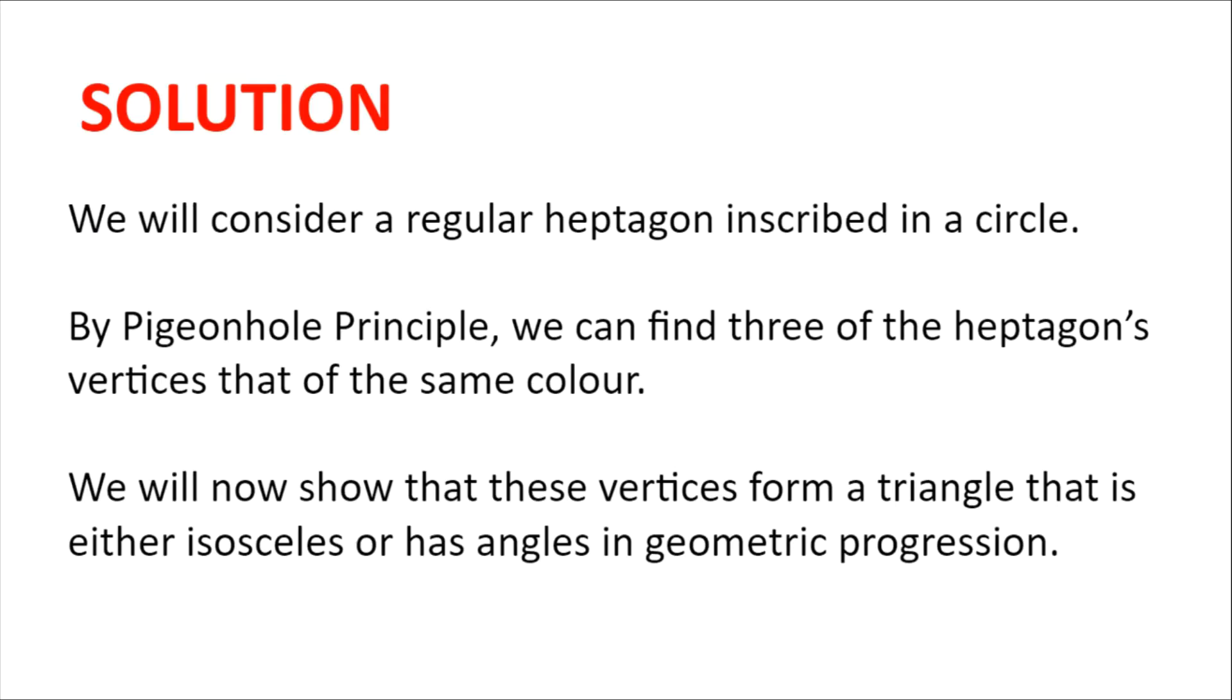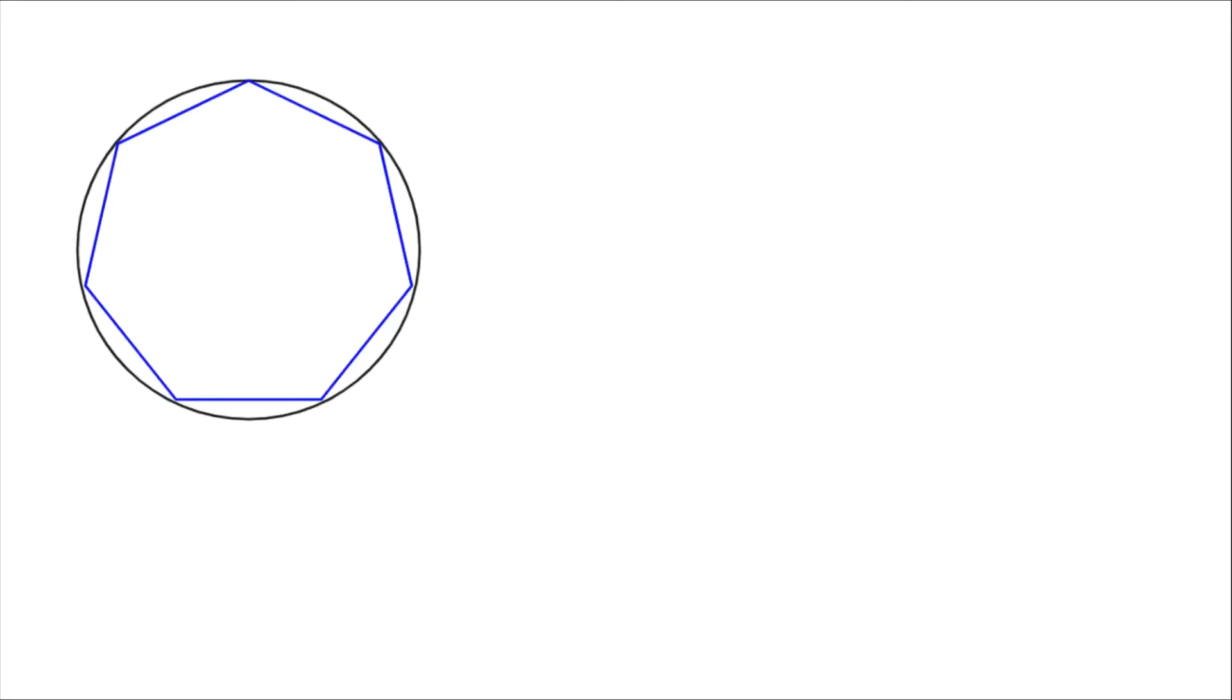Solution. We will consider a regular heptagon inscribed in a circle. Then by pigeonhole principle, since a regular heptagon has seven vertices, we can find three of the heptagon's vertices that are of the same colour. We will now show that these vertices form a triangle that is either isosceles or has angles in geometric progression, and the solution will then be complete.